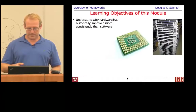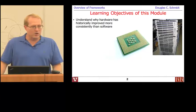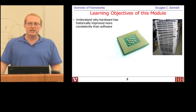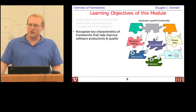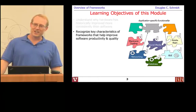In this set of material, we're first going to help you understand why hardware and networking has traditionally gotten better, faster, cheaper at a more regular pace than software has. We'll also describe some of the key characteristics of frameworks and explain how they help to improve software productivity and quality of code. The quiz next week on Wednesday will help ensure that you're following along with this kind of stuff.